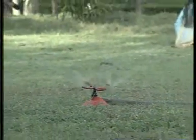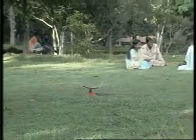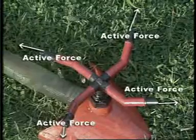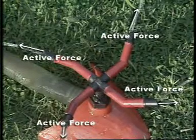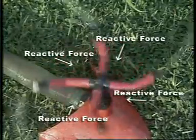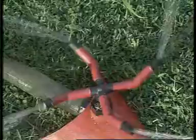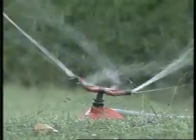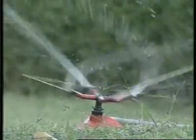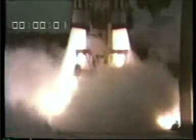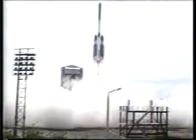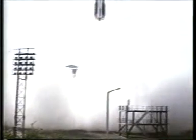In rotating sprinklers, there is no mechanical device to rotate the nozzles. Instead, it is the action and reaction of forces that make the sprinkler rotate. While the active force makes water jet out of the nozzles, the reactive force of the water jet pushes the nozzles in the opposite direction, making the sprinkler rotate. Not just simple sprinklers, but rockets too work on the principle of action and reaction. The active force of the burnt fuel escaping from the rocket vent creates an equal and opposite reactive force to provide the thrust needed to propel the rocket on its path.